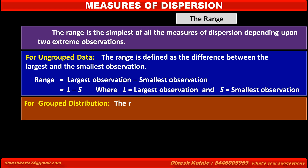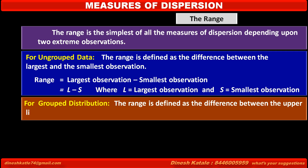For grouped distribution, the range is defined as the difference between the upper limit of the highest class and the lower limit of the lowest class.